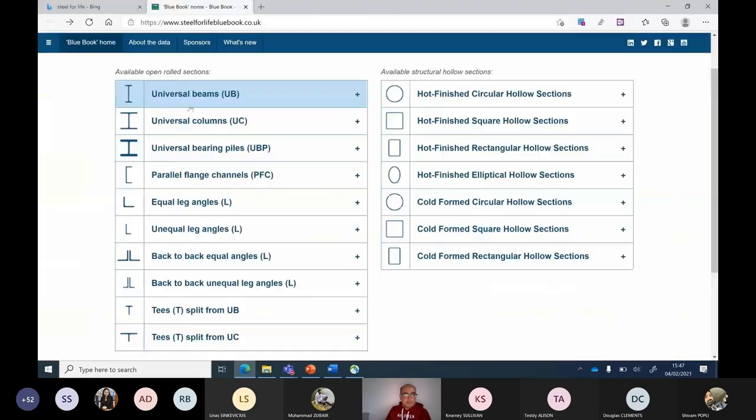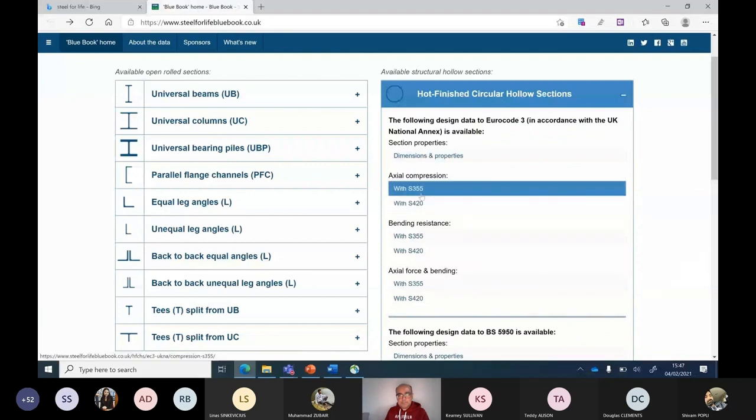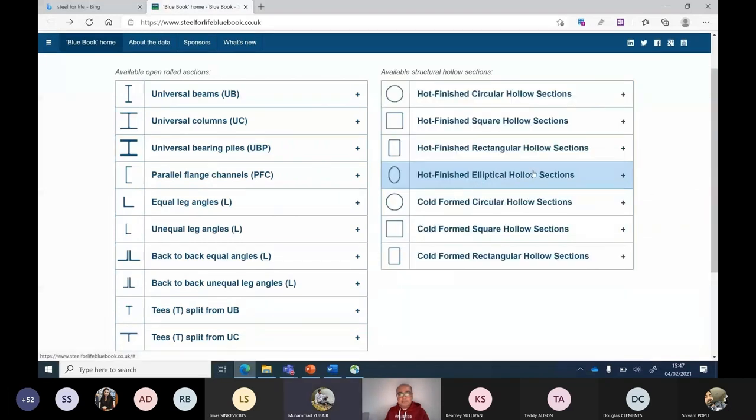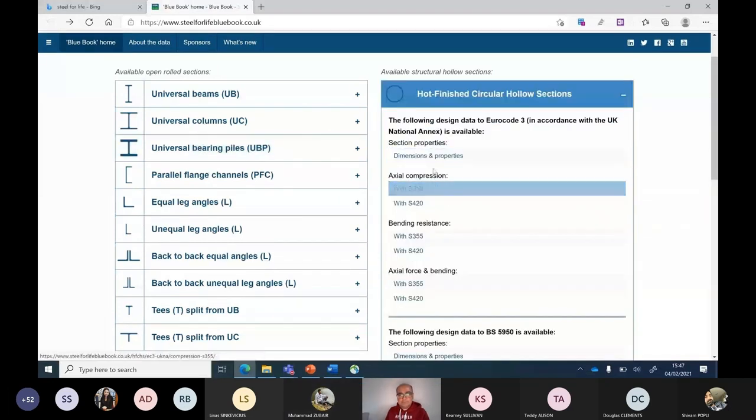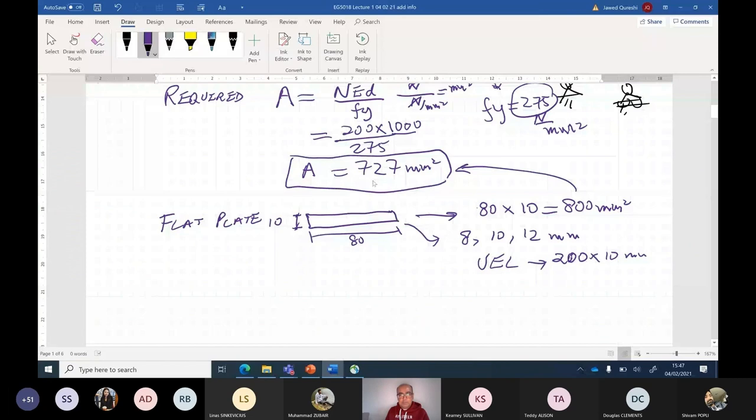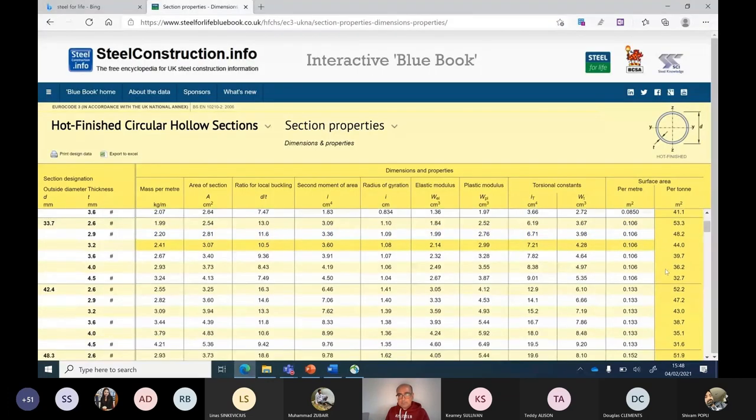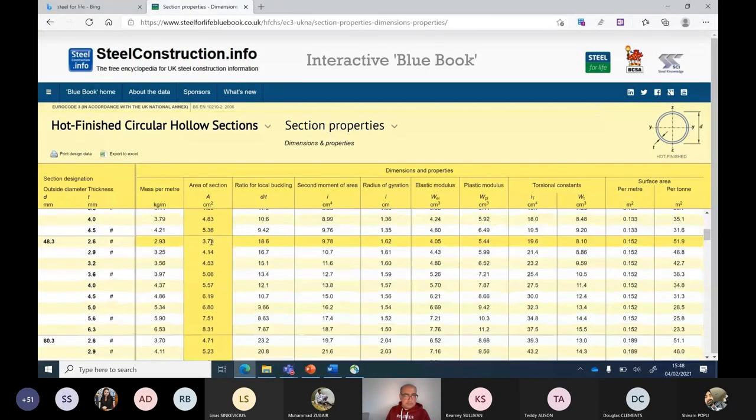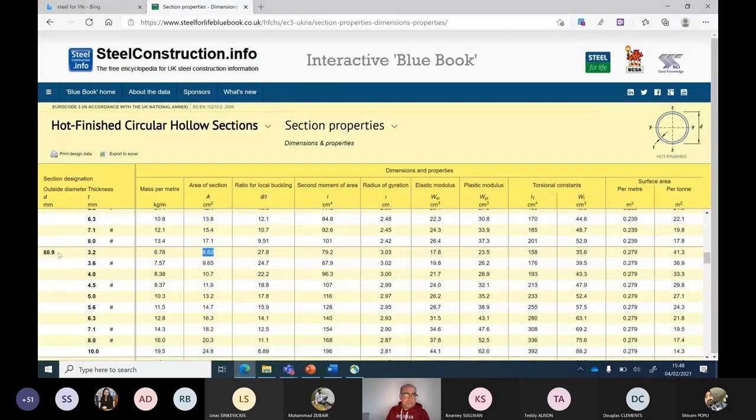If I want to use circular hollow sections, because circular hollow sections are available in 355, they are not available in 275, I will have to revise my formula. First of all, I will choose a section with an area which is higher than my required one. The required one is 727 millimeter square or 7.27 centimeter square. Having a look here, these are the areas of sections. I can probably use this one: 88.9 diameter, 3.2 wall thickness circular hollow sections.